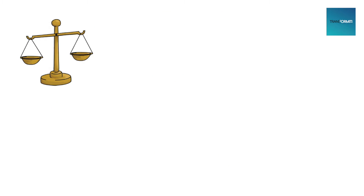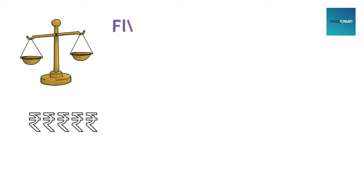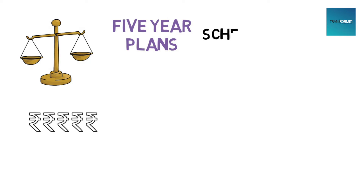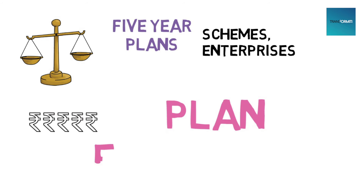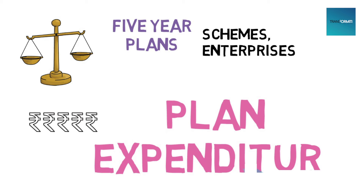Say you decide to enroll in law school. Paying your fees consistently for 5 years is a planned expenditure for your parents. Similarly, India follows the system of 5-year plans with specific targets. Each plan specifies programs including schemes as well as enterprises that ministries will fund and develop over the next 5 years. The expenditure allocated for these programs is planned expenditure.